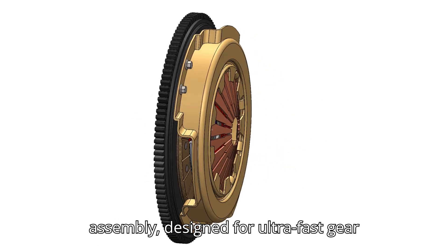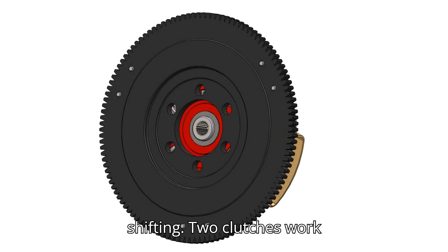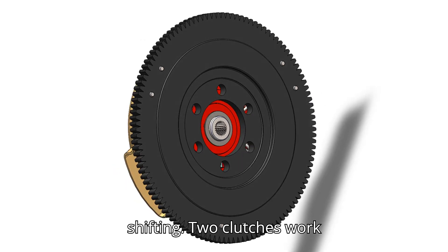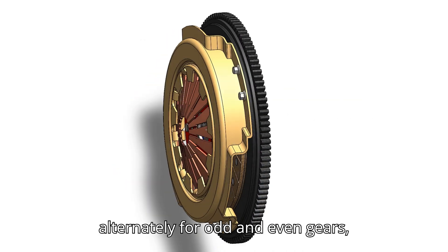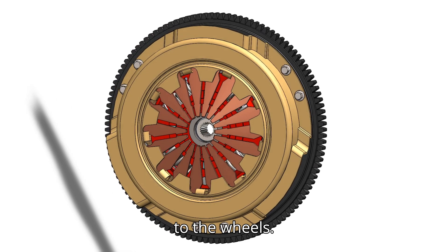This is a single-disc clutch plate assembly designed for ultra-fast gear shifting. Two clutches work alternately for odd and even gears, delivering smooth and uninterrupted power to the wheels.